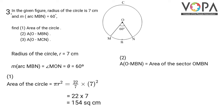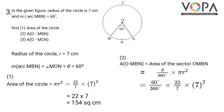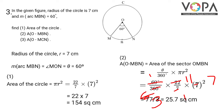Area of sector O-MBN equals theta/360 into πr². Theta has value 60, so we have 60/360 into 22/7 into 7 squared. Cancelling one zero from numerator and denominator, and one 7 from each, and simplifying 22 and 6 — we get 11 into 7 divided by 3, that is 77 divided by 3, which gives 25.7 square cm.